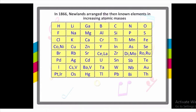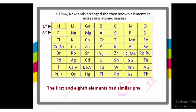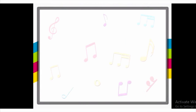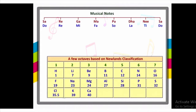He noted that in this arrangement, the first and eighth elements had similar physical and chemical properties. As he was also a musician, he compared this pattern to the notes of the octaves found in Indian and Western music, and gave the famous Newlands' Law of Octaves — just as the first note is the same as the eighth note in music.